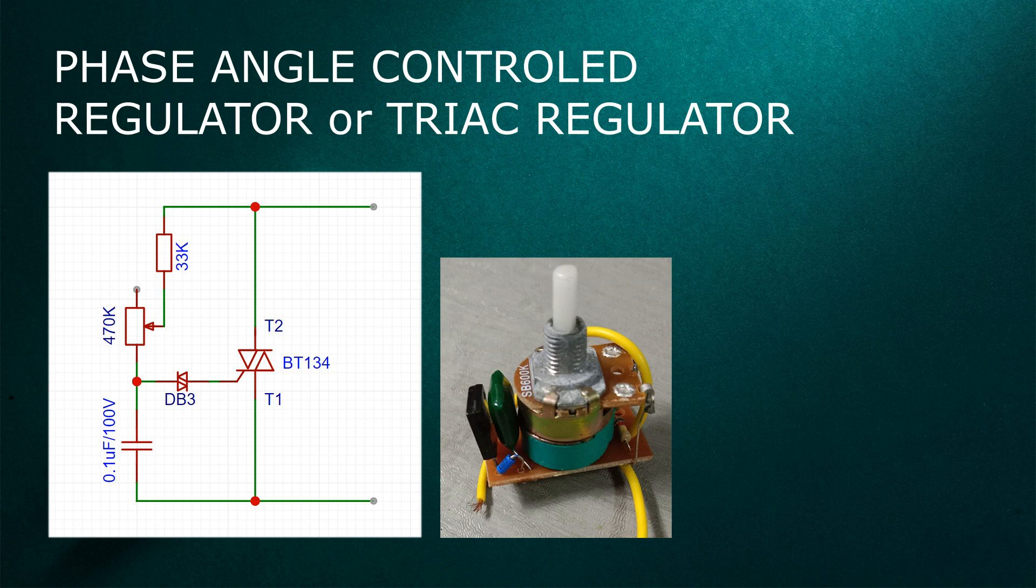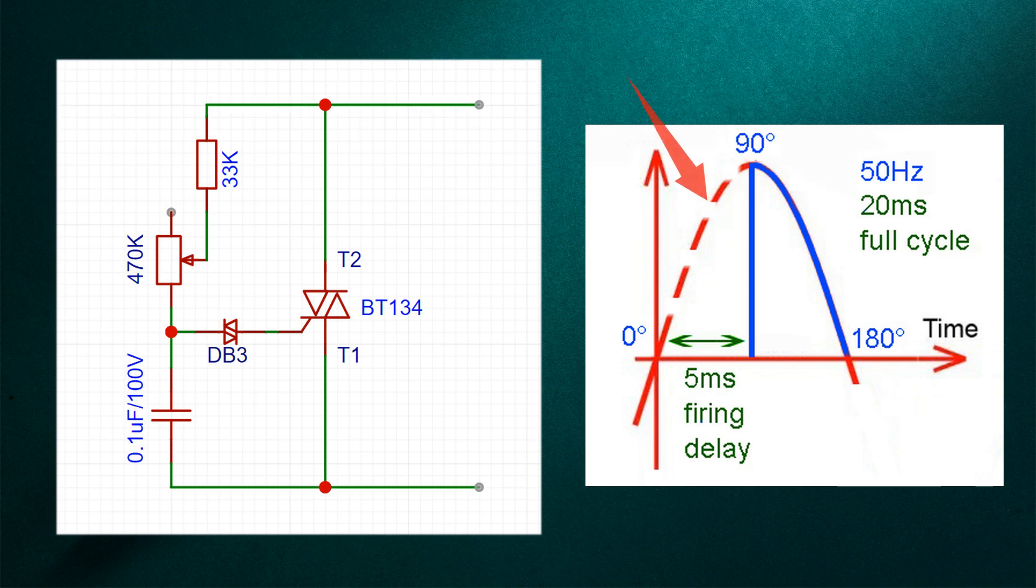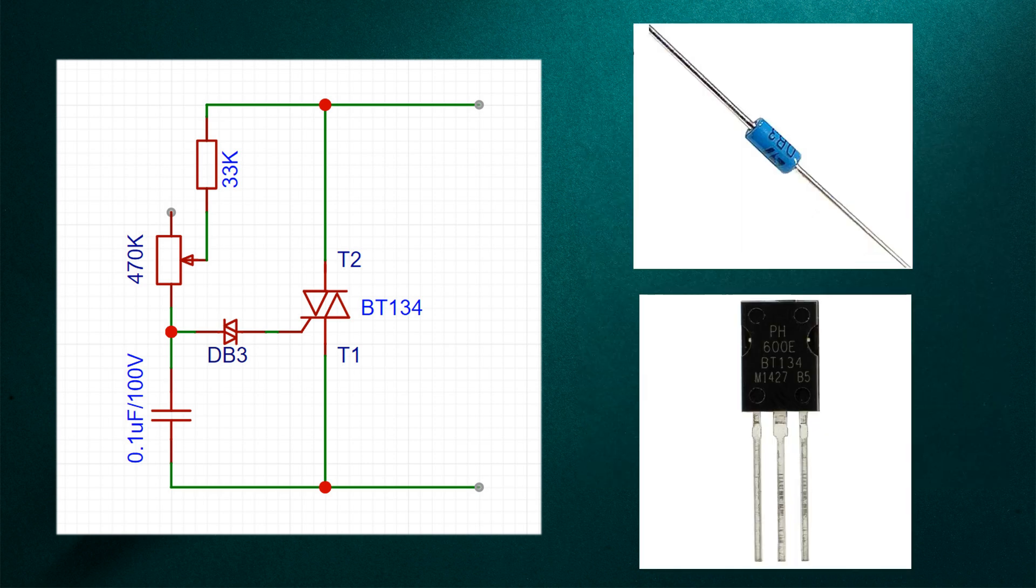Now let's talk about the phase angle control type regulators. They work a bit differently compared to the regulators we have discussed so far. They basically alter the firing angle of the triac in order to change the voltage across the fan. A firing angle is a point at which the triac starts conducting electricity. They use active components like diacs and triacs.